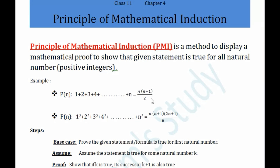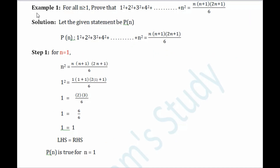We basically follow three steps: base case, assume, and prove. I'll explain all these steps through an example, because explaining them in the abstract may be hard to follow. This is the first example from your NCERT textbook.